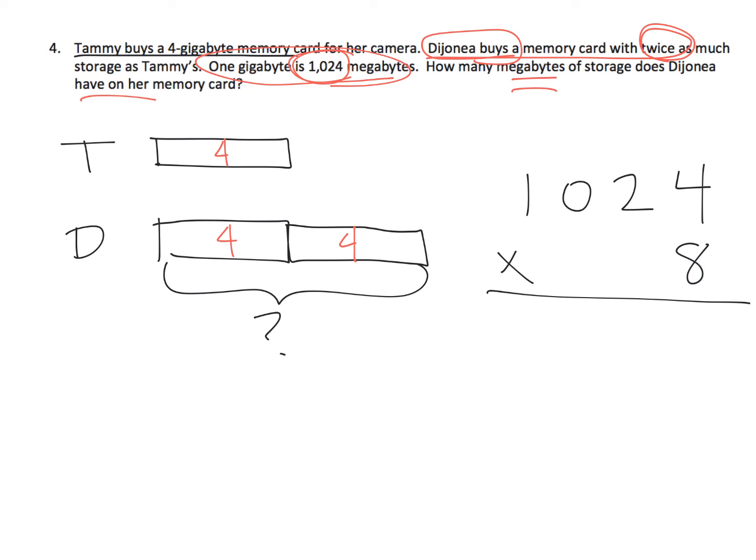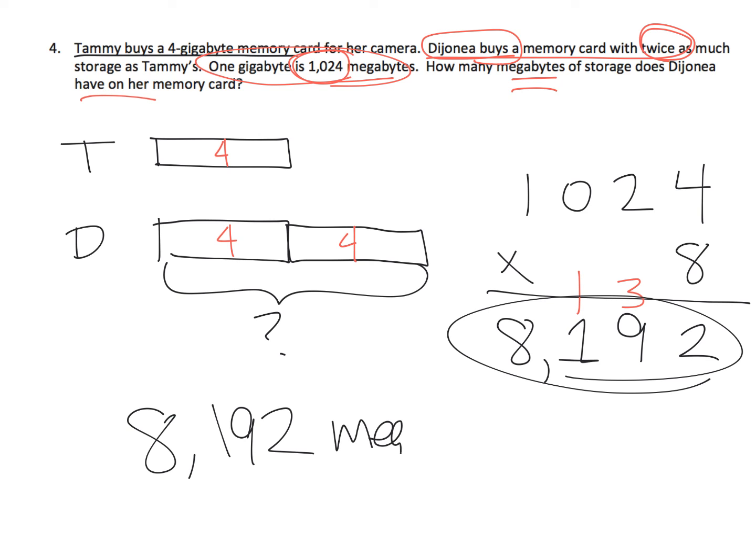8 times 4 ones is 32. So that's 3 tens and 2 ones. 8 times 2 tens is 160. So that's 16 tens plus 3 tens. So that's 19 tens. So that's 1 in the hundreds column and 9 in the tens column. See the 19 right there? And then 8 times 0 hundreds is 0 hundreds plus the 1. That gives us 1 in the hundreds column. And then lastly, 8 times 1,000. 8 times 1,000 is 8,000. So our answer is 8,192 megabytes.